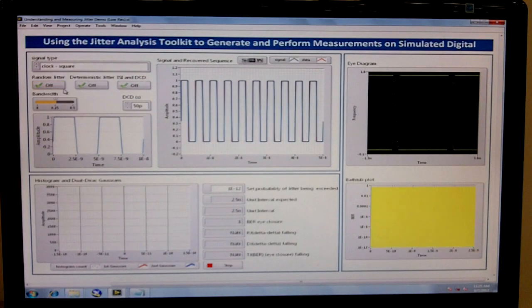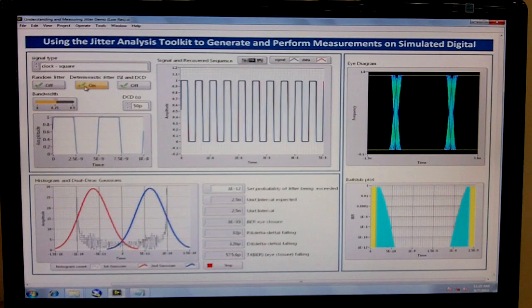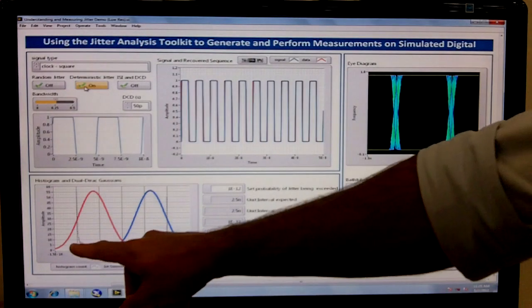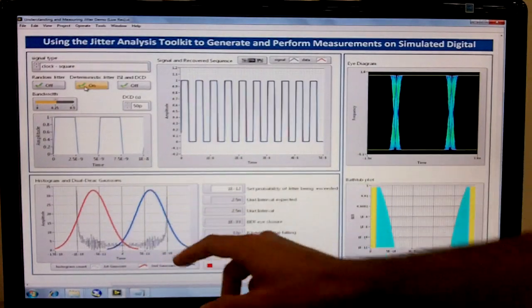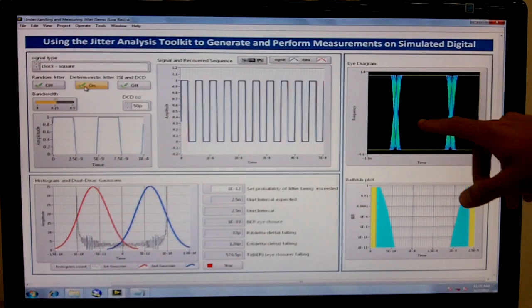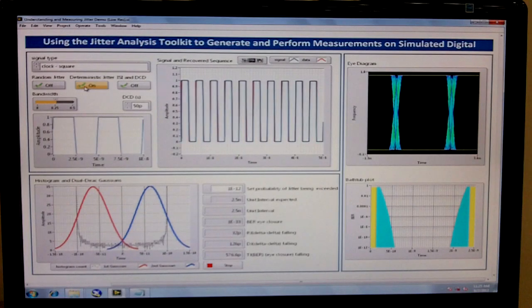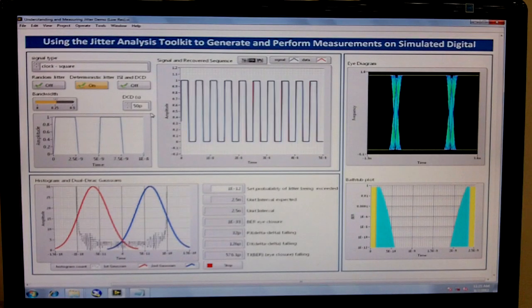We can remove that random jitter and then swap it out for some deterministic jitter. In this case, it's actually sinusoidal jitter that we're generating here. Deterministic, once again increasing the width of the transition area for the eye diagram.